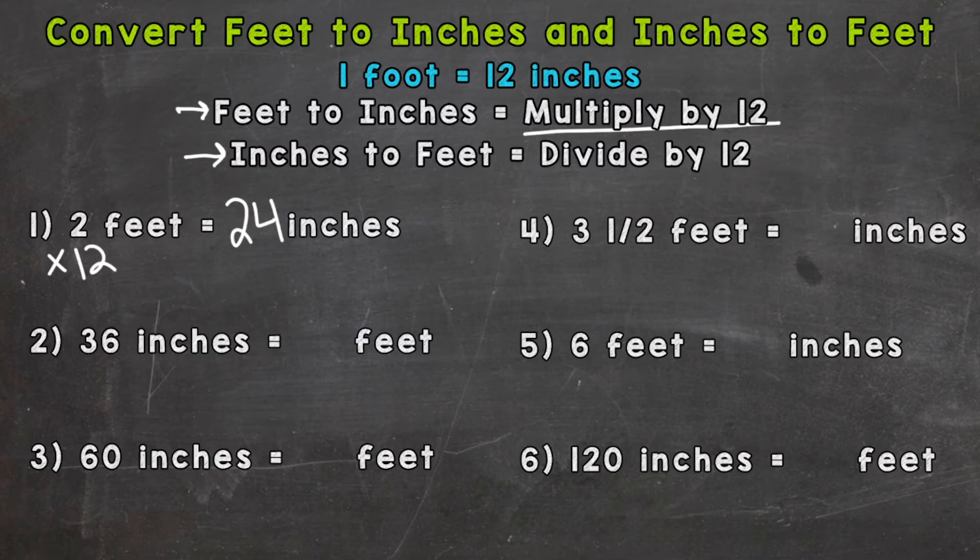Number two we have 36 inches and we are going to feet. So inches to feet we divide by 12. We're splitting that 36 into groups of 12 or feet. So we need to do 36 divided by 12 which gives us 3 feet.